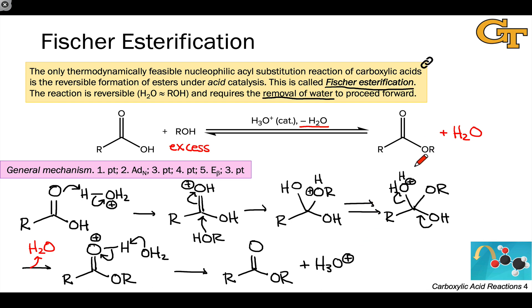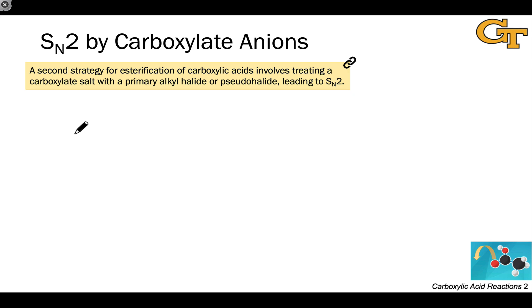When done in reverse, by the way, this is ester hydrolysis, and in that case, we use an excess of water, still an acid catalyst, but what we end up with, because of Le Chatelier's principle, is the reactant side, the carboxylic acid and alcohol. So that's one way to form an ester from a carboxylic acid, and that occurs under acidic conditions, at least catalytic acid.